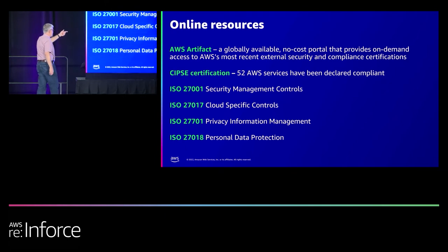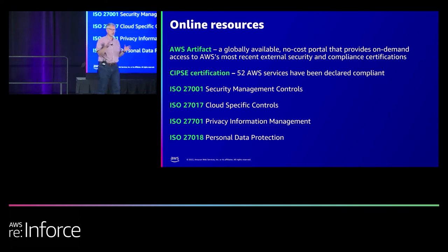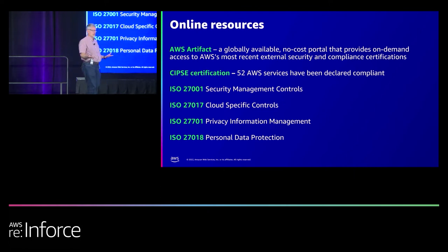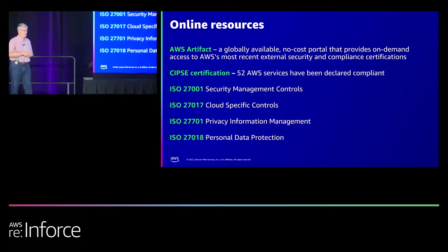Key ISO certifications to be aware of are 27701, 27017, and 27018. ISO is also coming out with identification and anonymization standards. The 31000 series and ISO 29100, 27500, and 30000 are all under development and focused on protecting personal information.